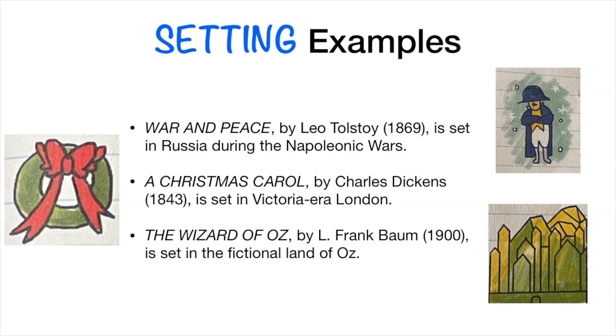So in War and Peace, it's set in Russia during the Napoleonic Wars. So here's a location, here's a time period, and here's Napoleon.